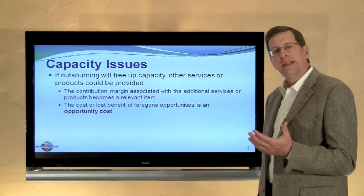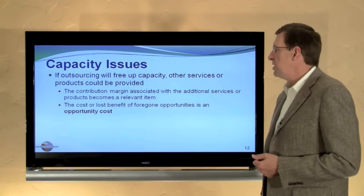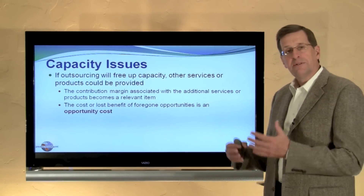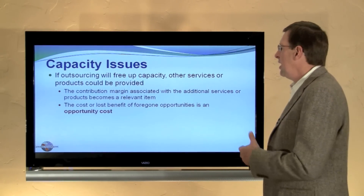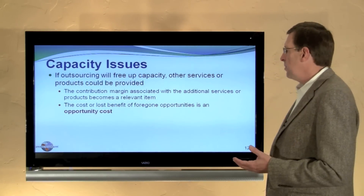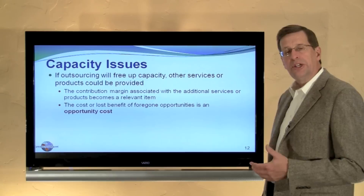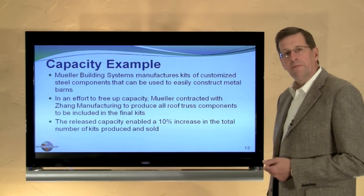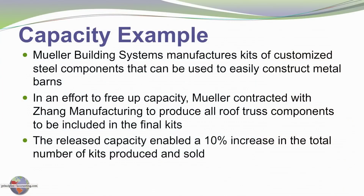Let's look at how capacity constraints factor in. Outsourcing can free up capacity that would allow us to produce other goods and services or expand overall production, in which case we want to look at the contribution margin associated with the additional production. There is a term called opportunity cost — the cost of a foregone alternative. For Mueller Building Systems, in an effort to free up capacity, they outsourced production of their roof trusses, freeing up 10% capacity in the factory to produce even more buildings.